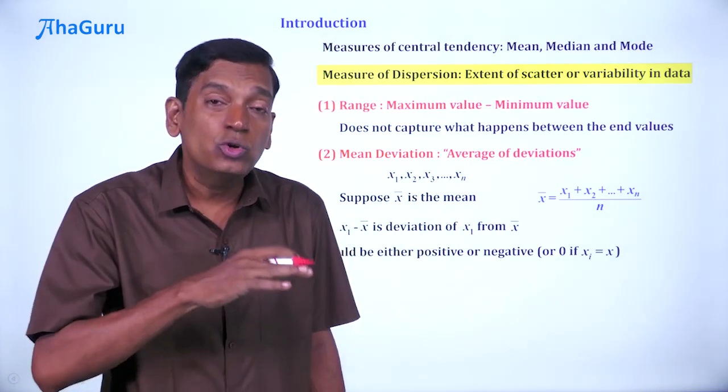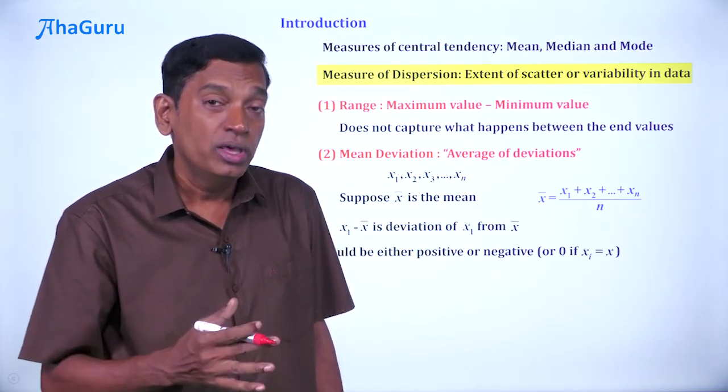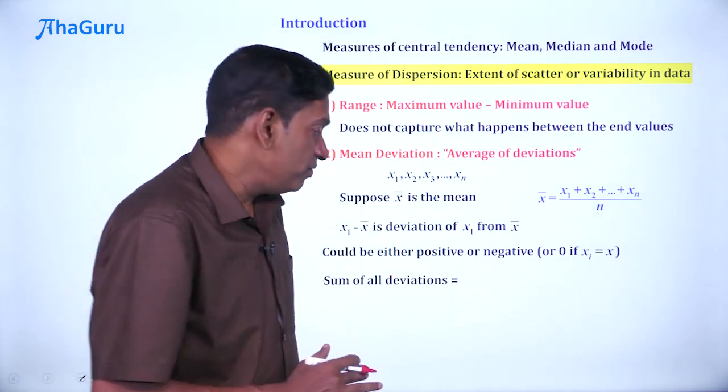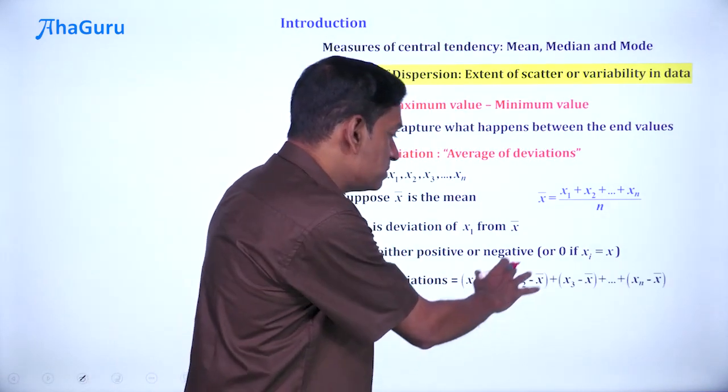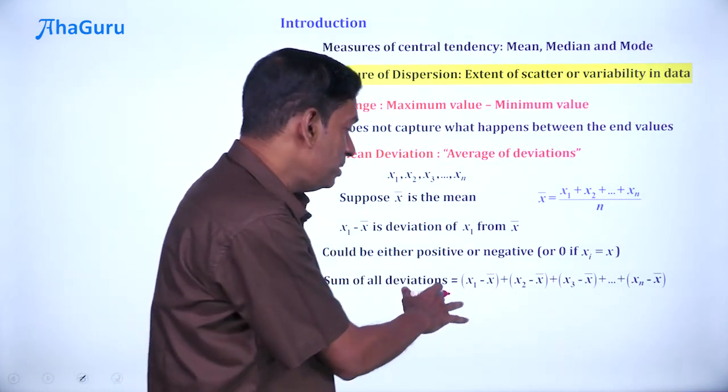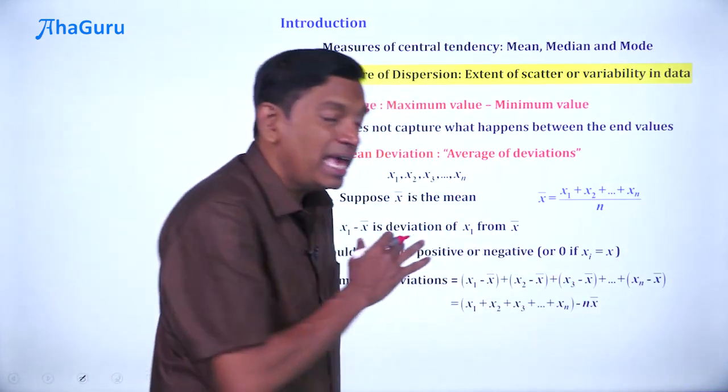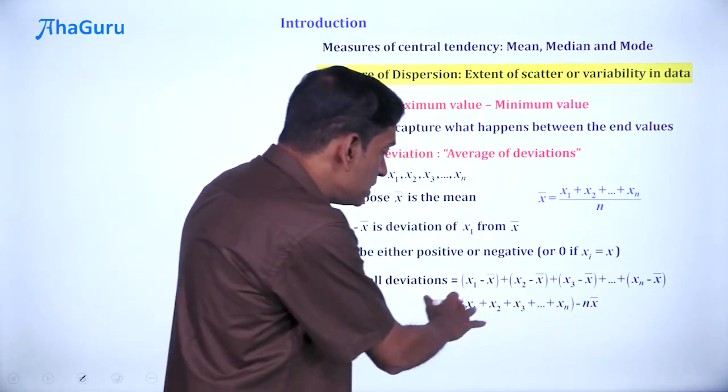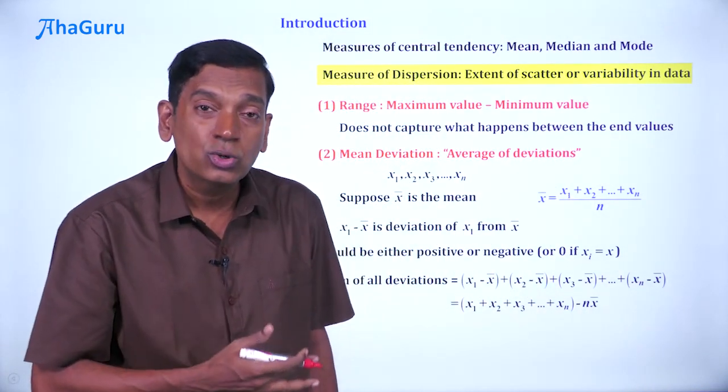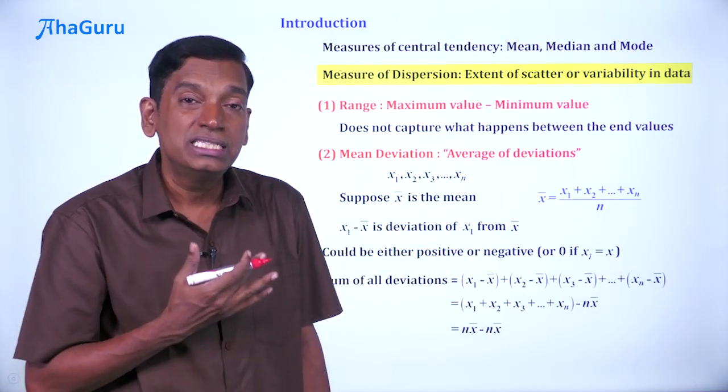Similarly, x2 minus x̄ is the deviation of x2 from x̄. Now, if we do the sum of all the deviations, what we will get is x1 minus x̄ plus x2 minus x̄, etc. And this number can be written as x1 plus x2 till xn minus nx̄, which equals nx̄ minus nx̄, which is simply 0.